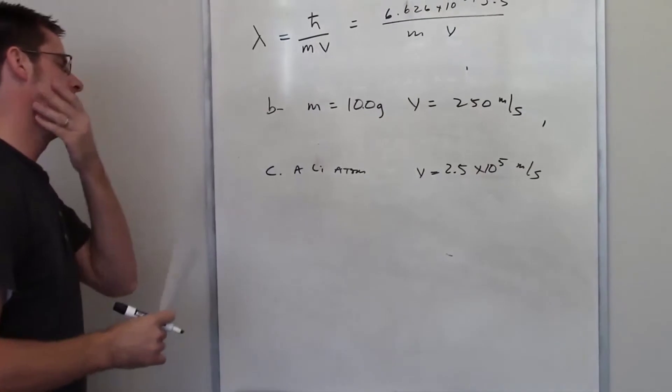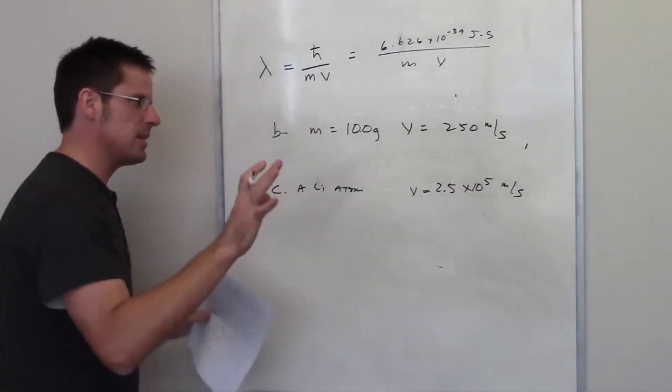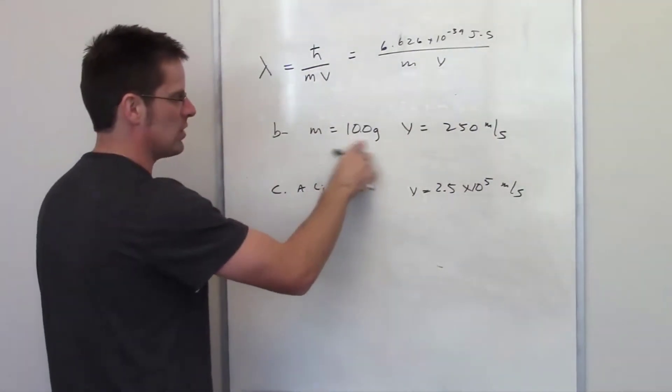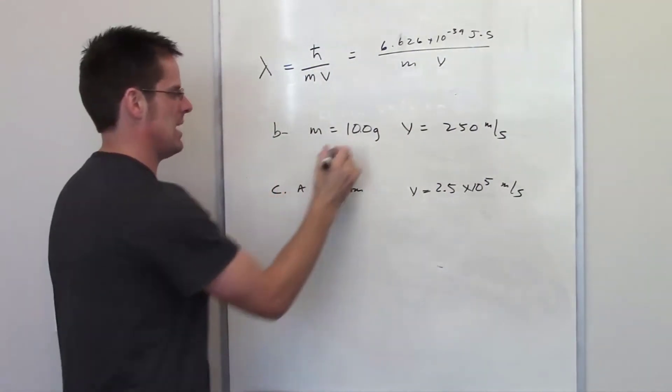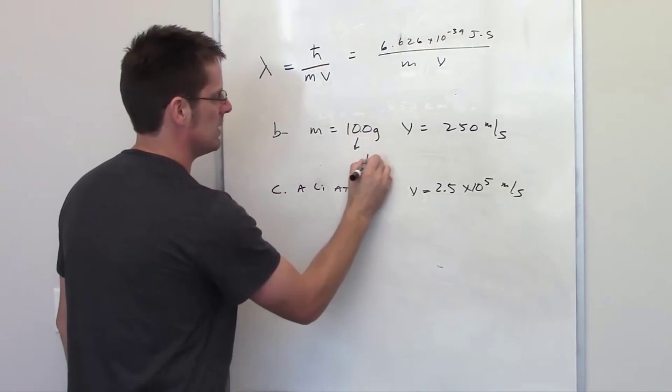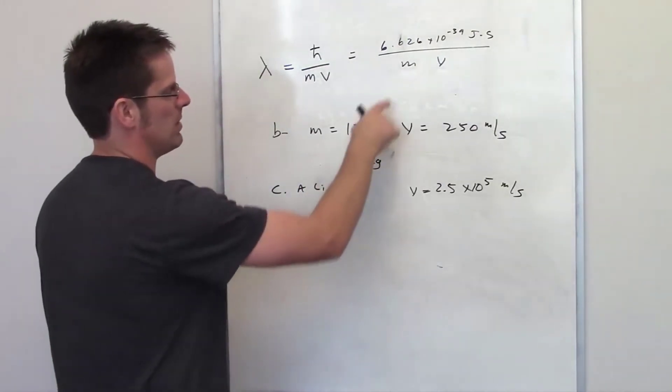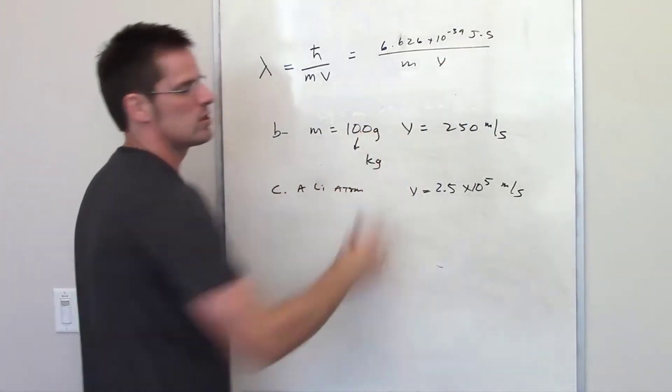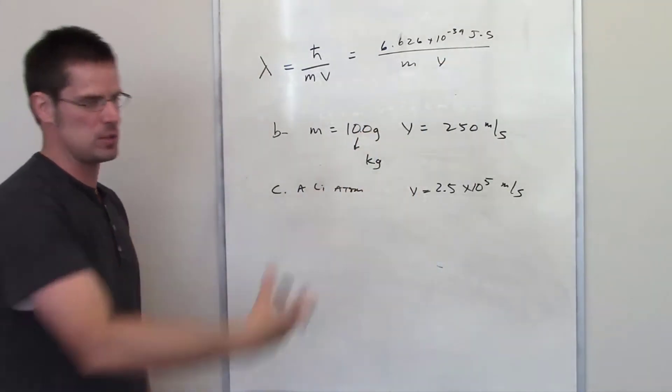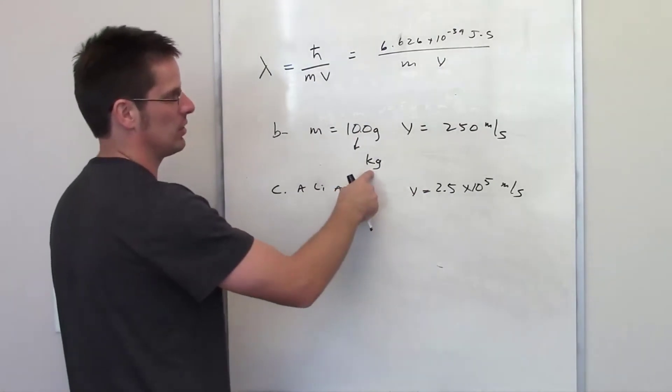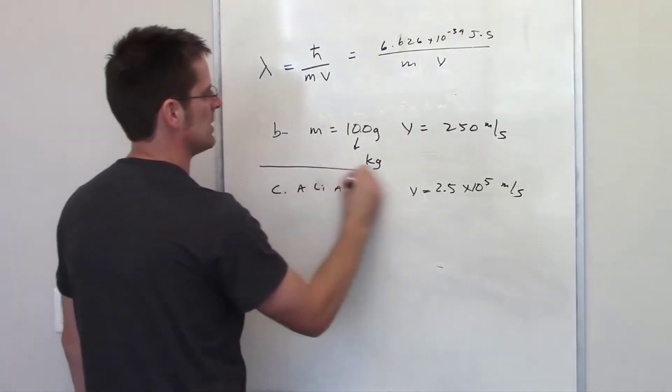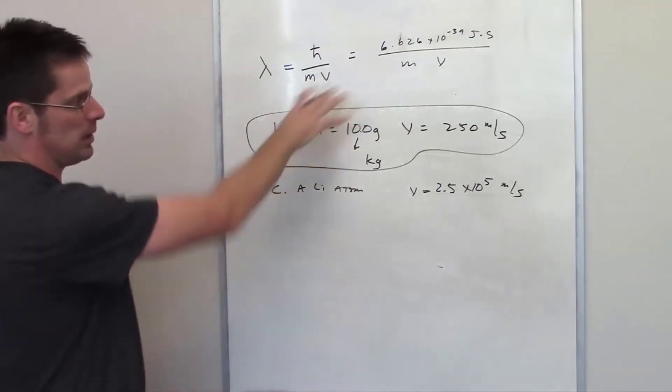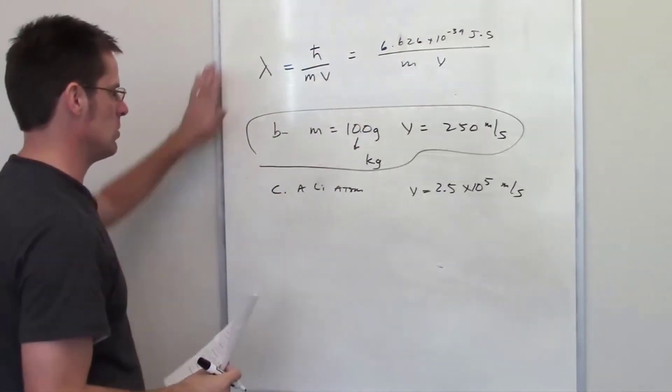And the second one is going to be a lithium atom whose velocity is going to be equal to 2.5 times 10 to the fifth meters per second. In order to do these problems, you're going to do the exact same approach. A couple things you need to keep in mind is you have to convert to SI units. So convert these 10 grams into kilograms.